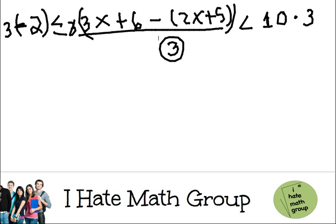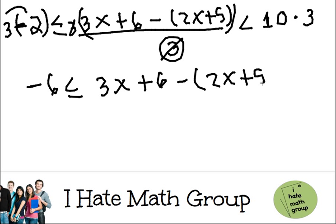Now here and this are going to cancel out. So I'm going to have 3 times negative 2, negative 6, less than or equals 3x plus 6 minus parenthesis 2x plus 5, less than 30. Beautiful.